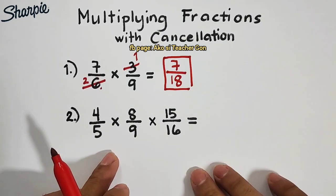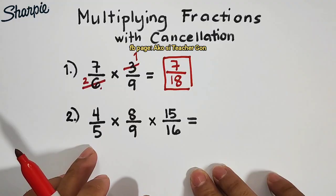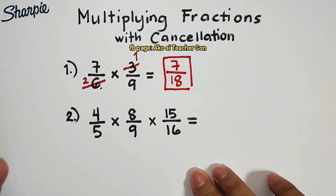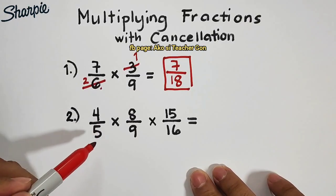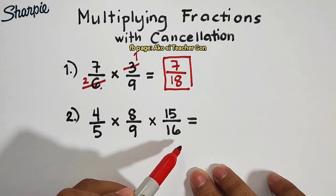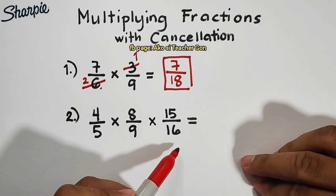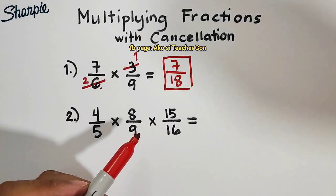Now, let's move on with item number 2. For number 2, we are given 3 different fractions. Still, we will use cancellation method. 4 over 5, times 8 over 9, times 15 over 16.